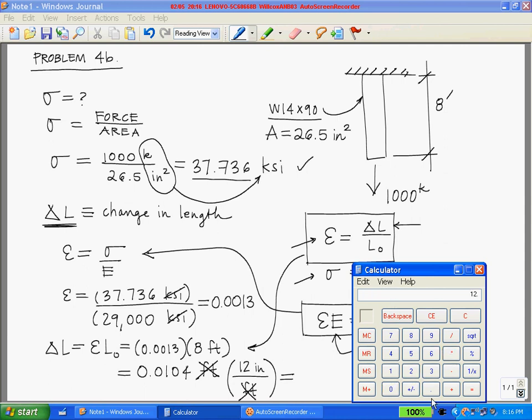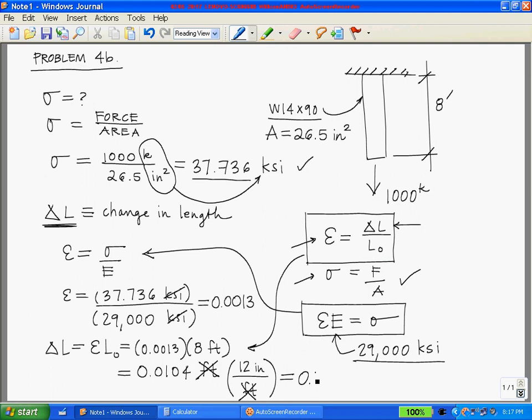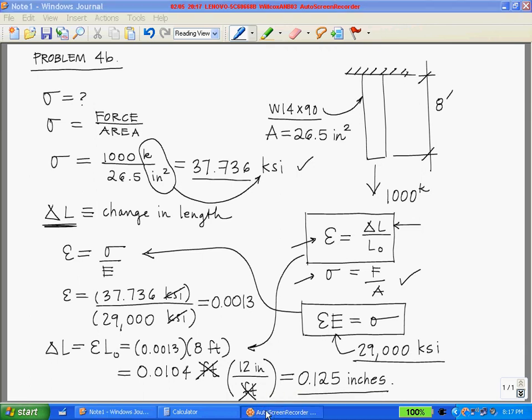Let's go back to the calculator. We have our 0.0104 feet times 12 inches equals 0.125 inches, and that's the answer to this problem.